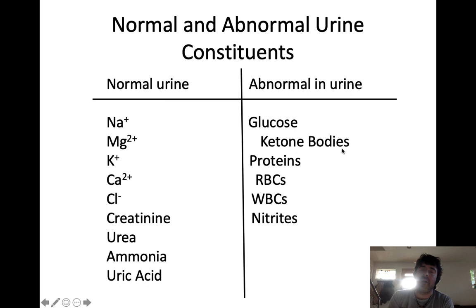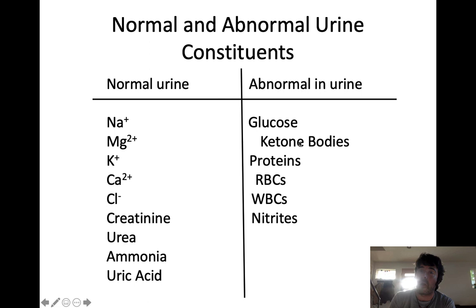Ketone bodies can sometimes be found in urine — they are the byproduct of the breakdown of fat. If you're intentionally trying to lose weight through dieting and exercising and you find ketone bodies in your urine, that's normal. But if you find both ketone bodies and glucose — meaning you have plenty of glucose in your blood but your body can't use it and is using fat instead — that is a hallmark characteristic of diabetes. Finding both glucose and ketone bodies is 100% reflective of a diabetes diagnosis.